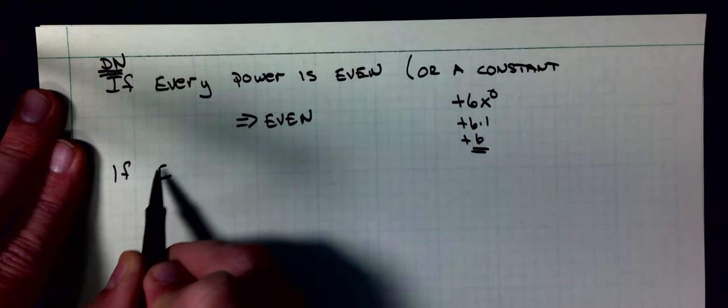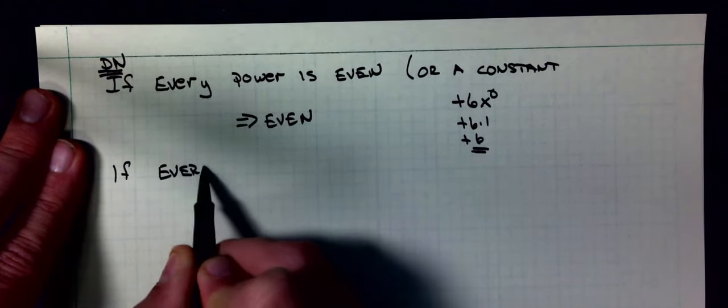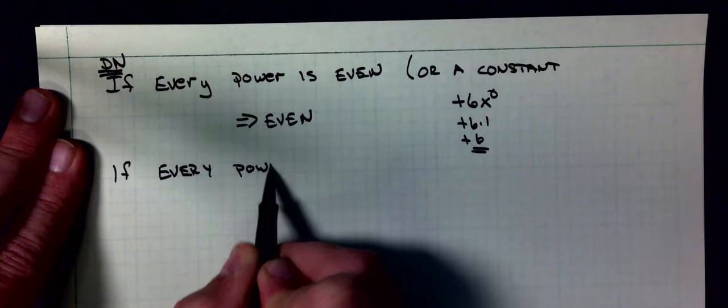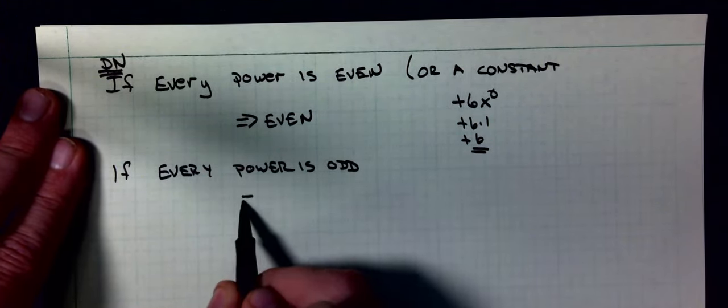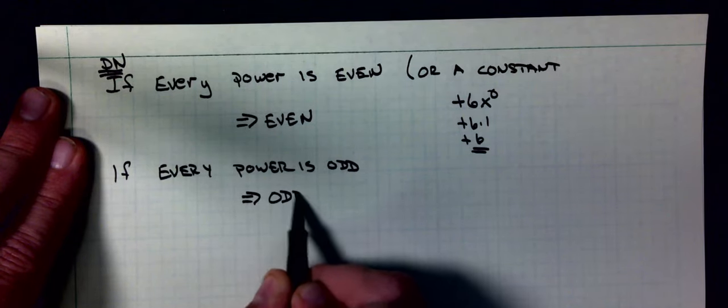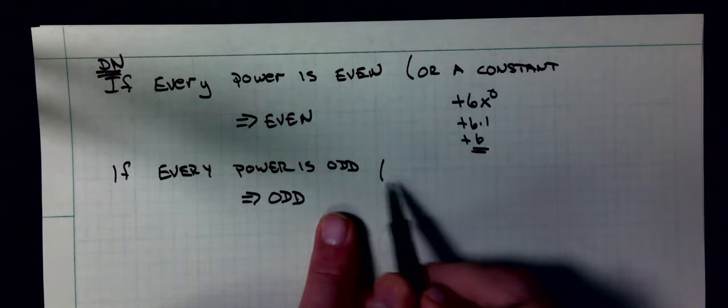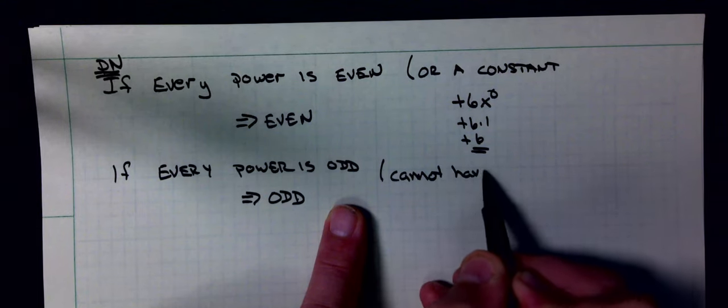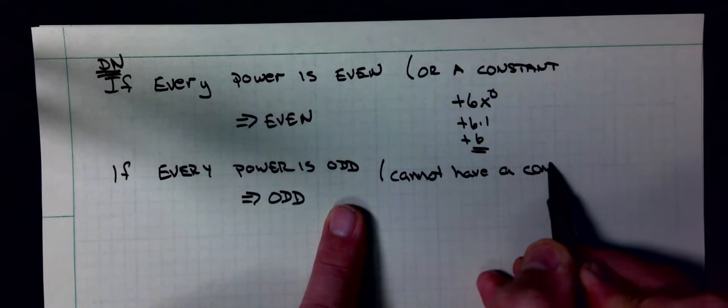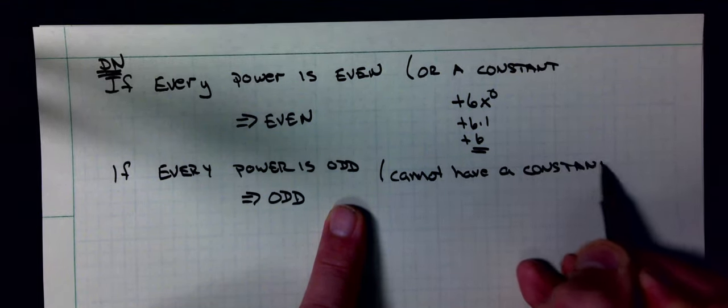If every power is odd, the function is odd, but it cannot have a constant.